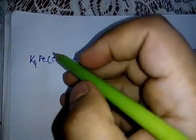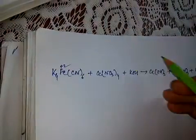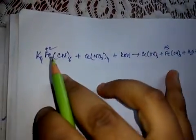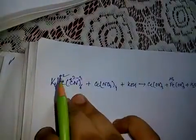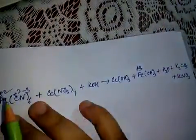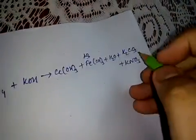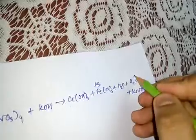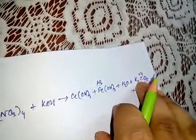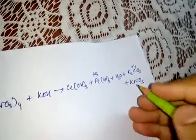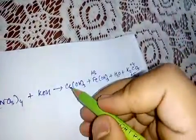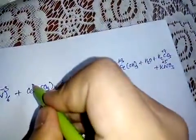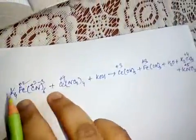First we have to write the oxidation numbers. Here Fe is present in plus 2 oxidation state and here it will be in plus 3 oxidation state, so it is oxidized. Carbon is present in plus 2 oxidation state, and nitrogen in minus 3 — we have to know this from the structure. Here carbon in CO3 is in plus 4 oxidation state, with CO3 having a minus 2 charge, so nitrogen in NO3 minus is in plus 5 oxidation state (6 minus 1 = 5). Cerium is present in plus 3 oxidation state here and plus 4 here. No more oxidation states are changing — only these atoms' oxidation states are changed.